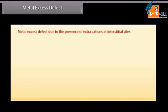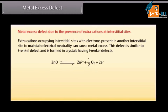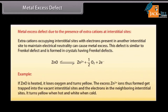The electrons absorb some energy from white light and re-emit the yellow color. Metal excess defect can also occur due to the presence of extra cations at interstitial sites. Extra cations occupy interstitial sites with electrons present in neighboring interstitial sites to maintain electrical neutrality. This defect is similar to the Frenkel defect. For example, when ZnO is heated, it loses oxygen and turns yellow. The excess Zn²⁺ ions formed get trapped into vacant interstitial sites, and the electrons occupy neighboring interstitial sites. It turns yellow when hot and white when cold.